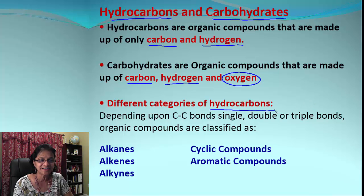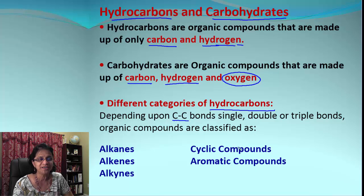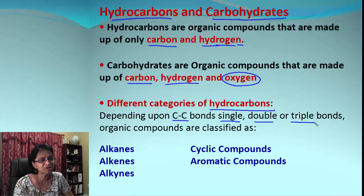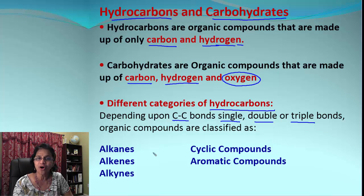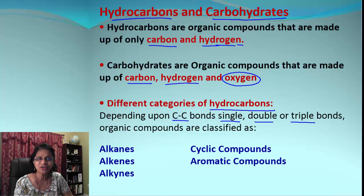We will focus on hydrocarbons. Based upon the different types of bonds between carbon and carbon, we get different categories. The bond between carbon and carbon could be single, double, or triple; it could be a chain, a ring, or the bonds could be alternating. Based upon that, we get different types of compounds: alkanes, alkenes, alkynes, cyclic compounds, and aromatic compounds.